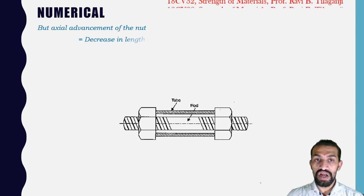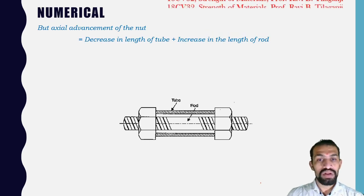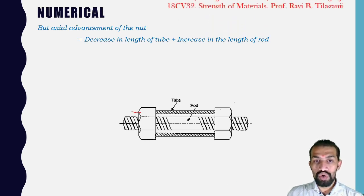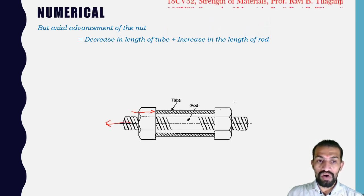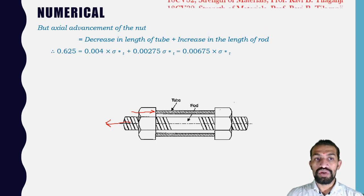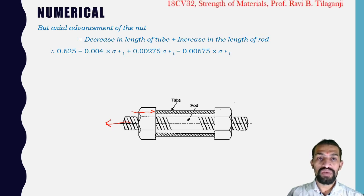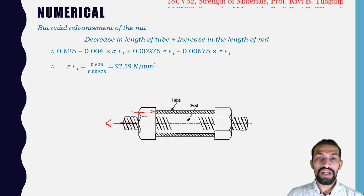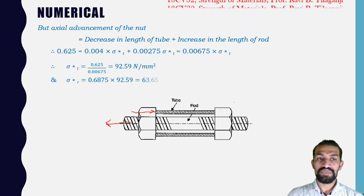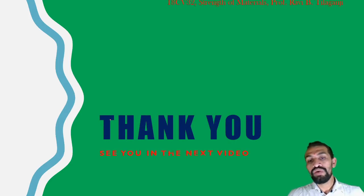Actual advancement of nut = decrease in length of tube + increase in length of rod: 0.625 = 0.004 σ*T + 0.00275 σ*T. Solving: σ*T = 92.59 N/mm² and σ*R = 63.65 N/mm². Thank you, see you in the next video.